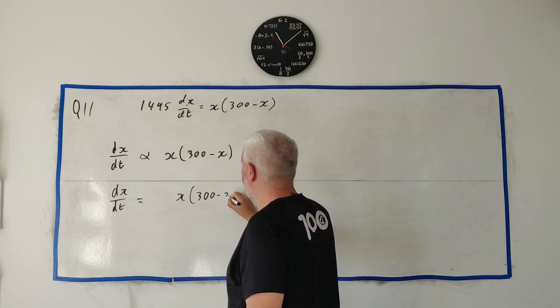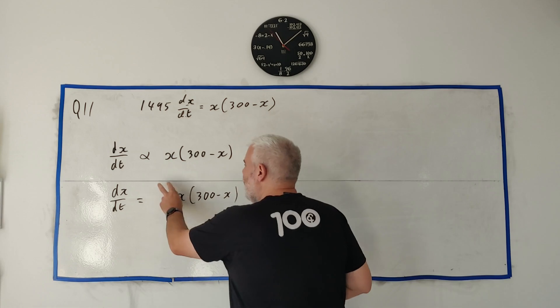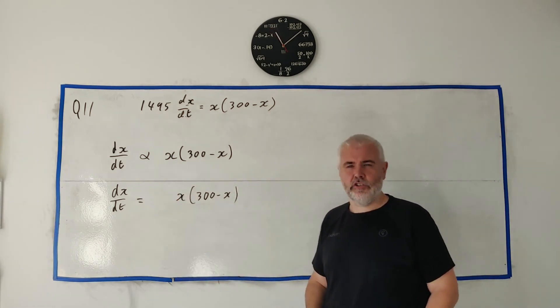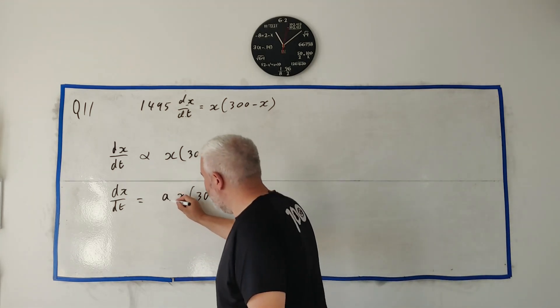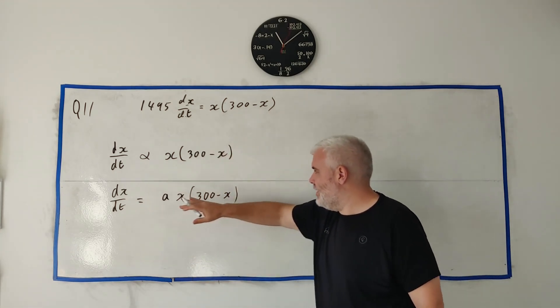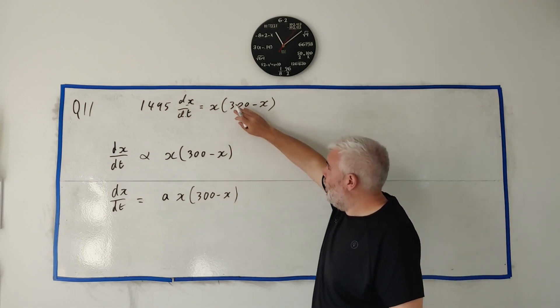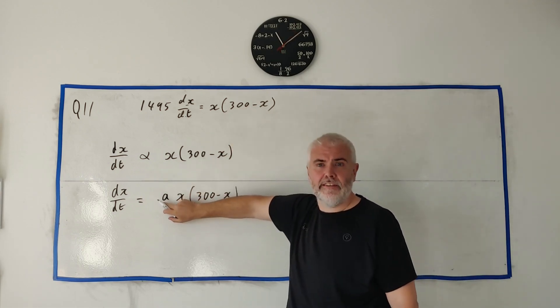And we do that by this. dX/dT is equal to this. X multiplied by 300 minus X. If we multiply it by something. Just some number. A number we don't know yet. So, we'll just make up a letter. Usually, A is fine. So, this is equal to this. And this is the same equation as up here. Except we just don't know what A is yet.